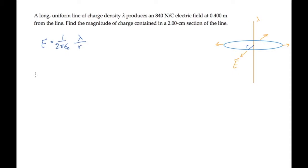We can solve this expression for lambda, the charge per unit length, to get 2π epsilon naught magnitude of the electric field times r.